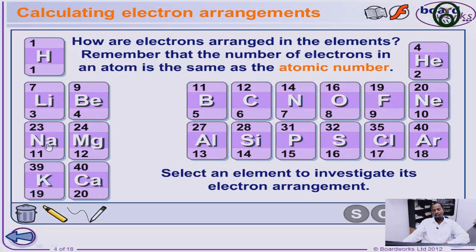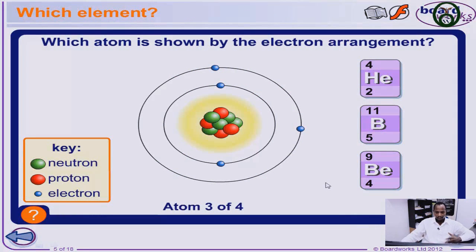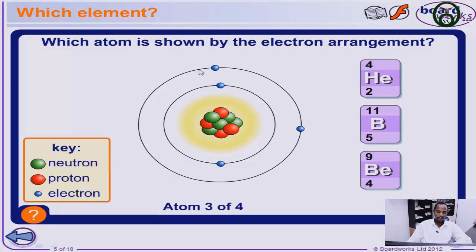I know you'll be wondering what these symbols mean — don't worry. We're going to make a video on chemical elements and their symbols: how potassium became K, how sodium became Na. We're going to talk about this in one of our videos. Now let's move ahead and take a look at the shell arrangement. Which element or atom is shown by an electron arrangement? The first shell has two electrons and the next one also has two electrons, so two plus two is four. Which element or atom has four electrons?